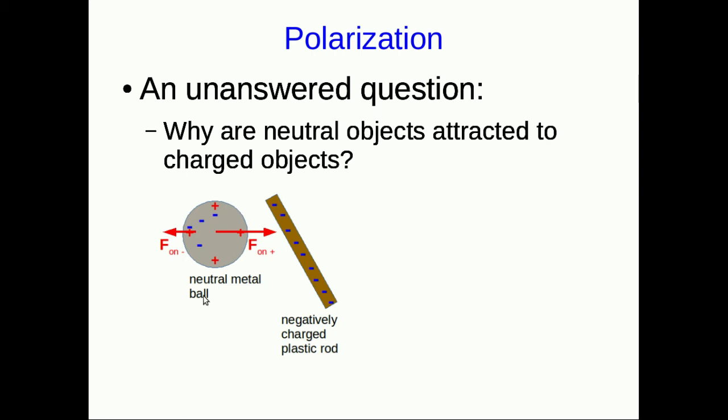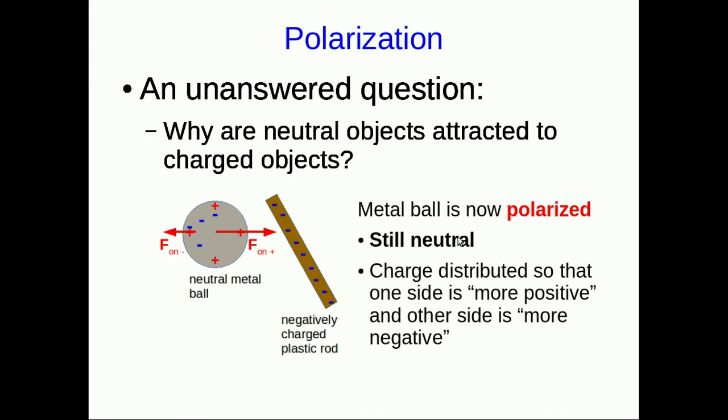We call what's just happened to the neutral metal ball polarization. The metal ball is now polarized. Note that it's still neutral. We haven't added any charge or taken any charge away from it. It still has equal quantities of positive and negative charge but that charge is now distributed differently so that one side of the ball is more positive and the other is more negative.